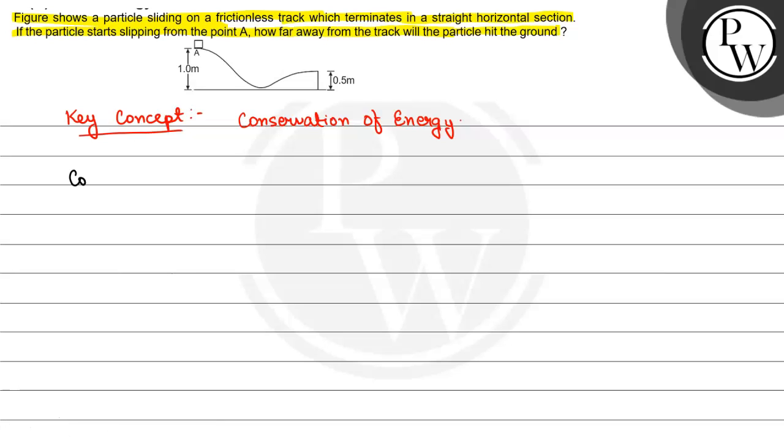First of all, we will conserve energy for point A and B. At A we have potential energy equal to Mg times 1, that will equal B's potential energy which is Mg times 0.5 plus half Mv squared. This will be the kinetic energy at B, or Mg times 0.5 equals half Mv squared.